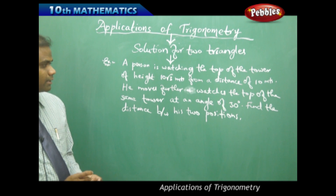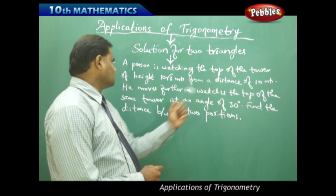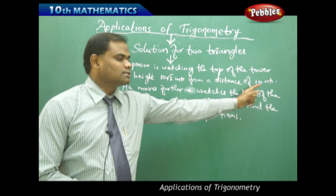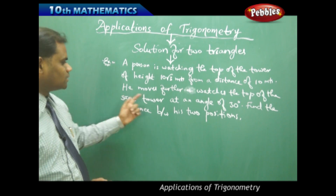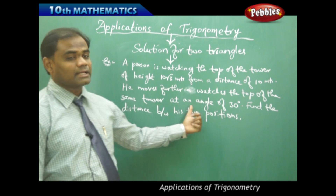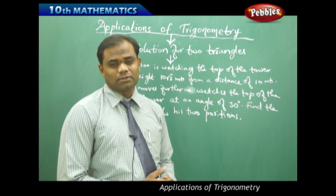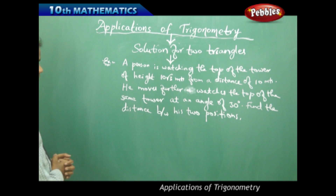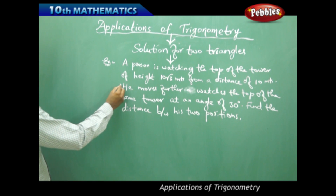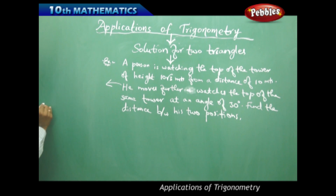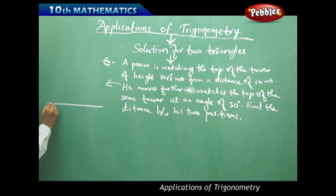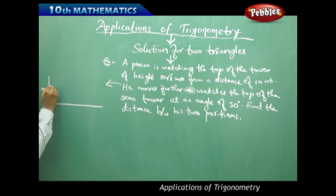Reading carefully: a person is watching the top of the tower of height 10 root 3 meters from a distance of 10 meters. He moves further and watches the top of the same tower at an angle of 30 degrees. We need to find the distance between his two positions. So let's convert this into a diagram. I first draw the ground, and here is the tower of height 10 root 3 meters.